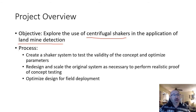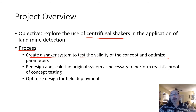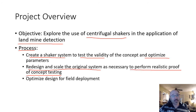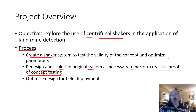The process for this project: first, we wanted to create a shaker system to test validity, concept, and optimize the parameters. To test this, our feedback loops come in — we need to measure things along the way, figure out what disturbances are in the system, and tweak them based on feedback loop information. Then with that information, we redesign and scale the original system as necessary to perform realistic proof of concept testing.